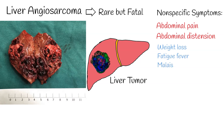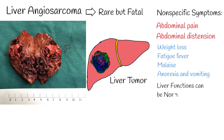Weight loss, fatigue, fever, malaise, anorexia, and vomiting can also occur, but these symptoms are not specific for liver angiosarcoma. Paradoxically, liver function is generally maintained until the final stages of the disease, further complicating diagnosis.